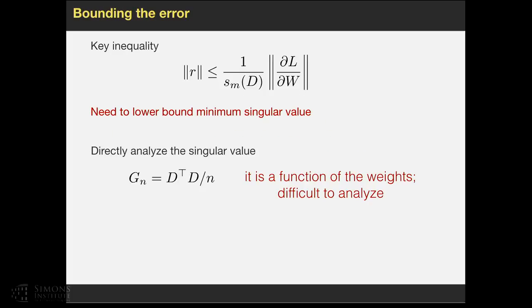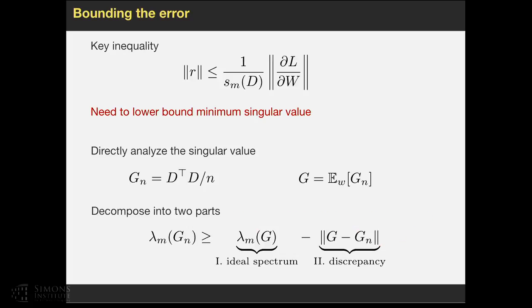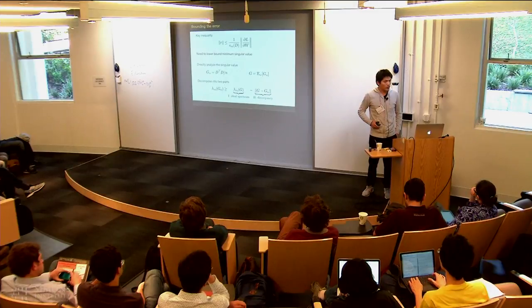We can directly try to analyze the singular value of D matrix. We can look at the Gram matrix, which is D transpose D. It is known that it is a function of the weight, so it's kind of difficult to analyze directly. That's why we introduce an intermediate variable G, where I assume the weights are uniform random and then we take expectation of them. So this intermediate variable G is no longer a function of the actual weight. Then the spectrum that we care about can be decomposed into two parts: the spectrum of G, which does not depend on the actual weight, and the difference between G and Gn. The distribution of the weights expectation is uniform on the sphere.